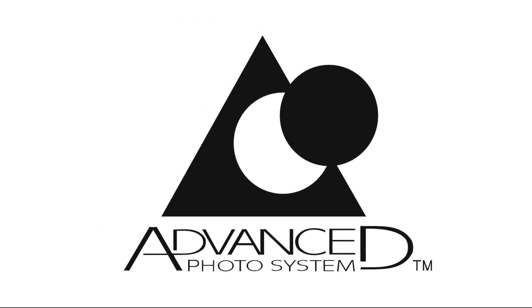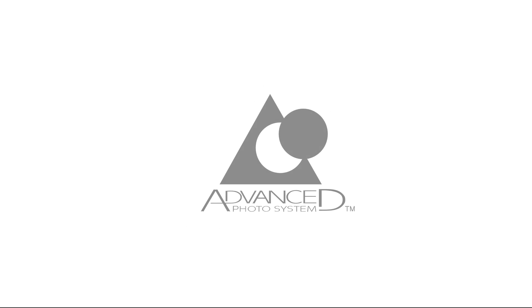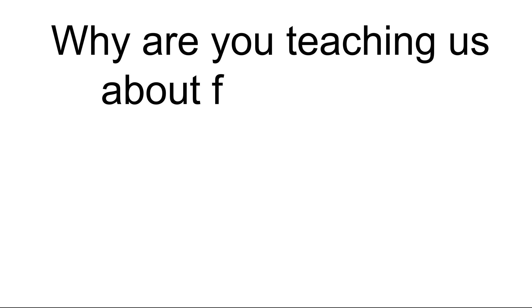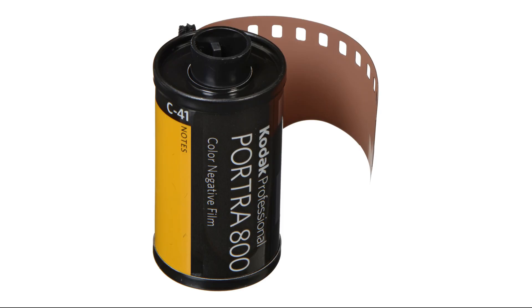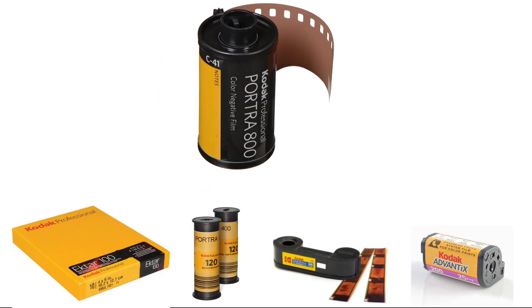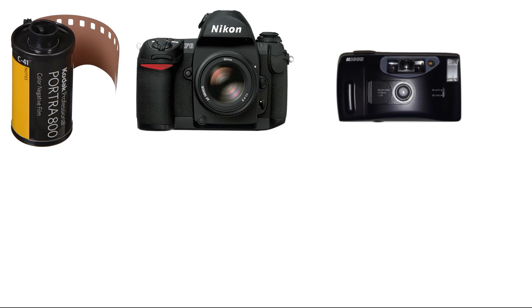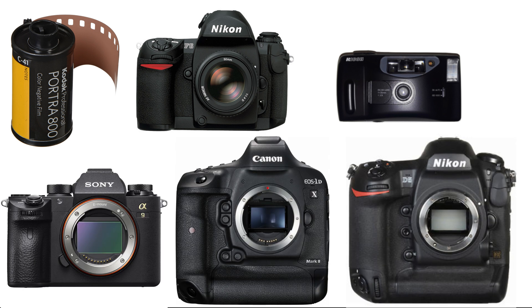The decline of the Advanced Photo System was due largely to the growing popularity of digital cameras and the lack of adoption by professional photographers. The discussion on film sizes is to emphasize how important the 35mm film format has been over the past 100 years. While all of the other formats, save the Advanced Photo System, are still in use today, most amateur photographers have never even heard of them. The importance of 35mm film, particularly in SLR and compact cameras that the general public would use, is the sole reason that today's digital cameras with a sensor size equivalent to 35mm film are referred to as full frame.